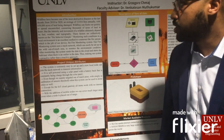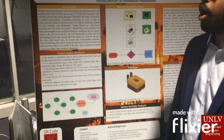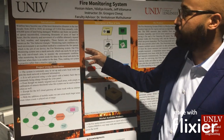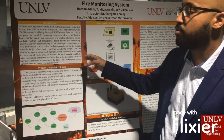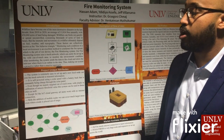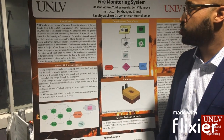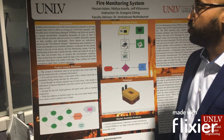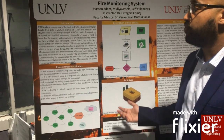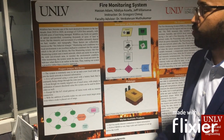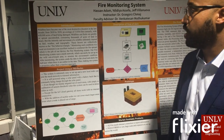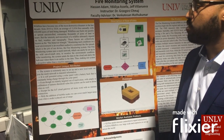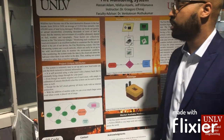Our project is a system that monitors and identifies different types of variables to predict and monitor for wildfires. Wildfires have become one of the most destructive disasters in the last decade. From 2010 to 2020, an average of 1,300 wildfires have annually occurred across 650 acres of land being damaged. Wildfires can also fizzle out quickly or spread uncontrollably, consuming thousands of acres of land in hours. The intensity and movement of wildfires ultimately depends on three areas.